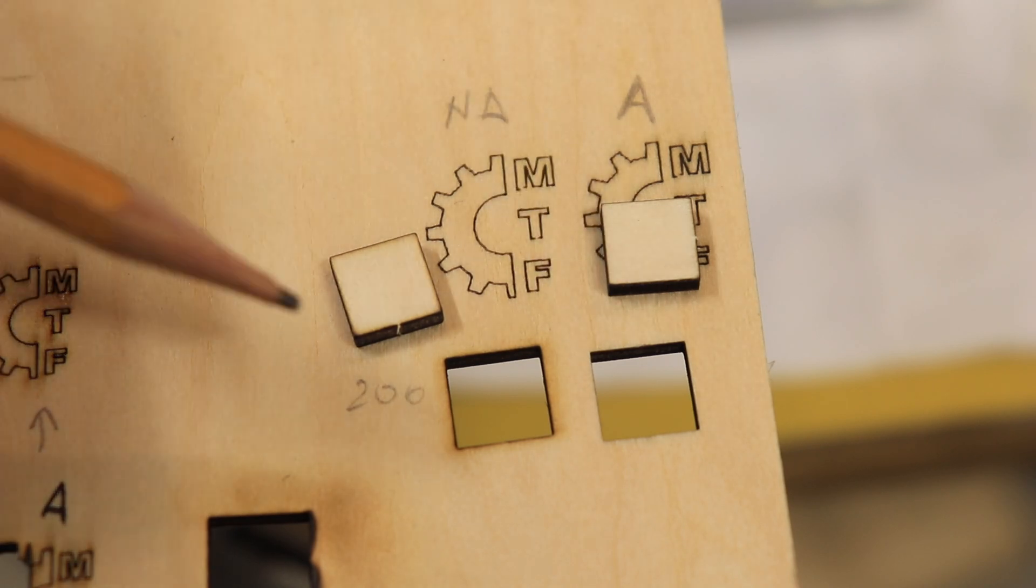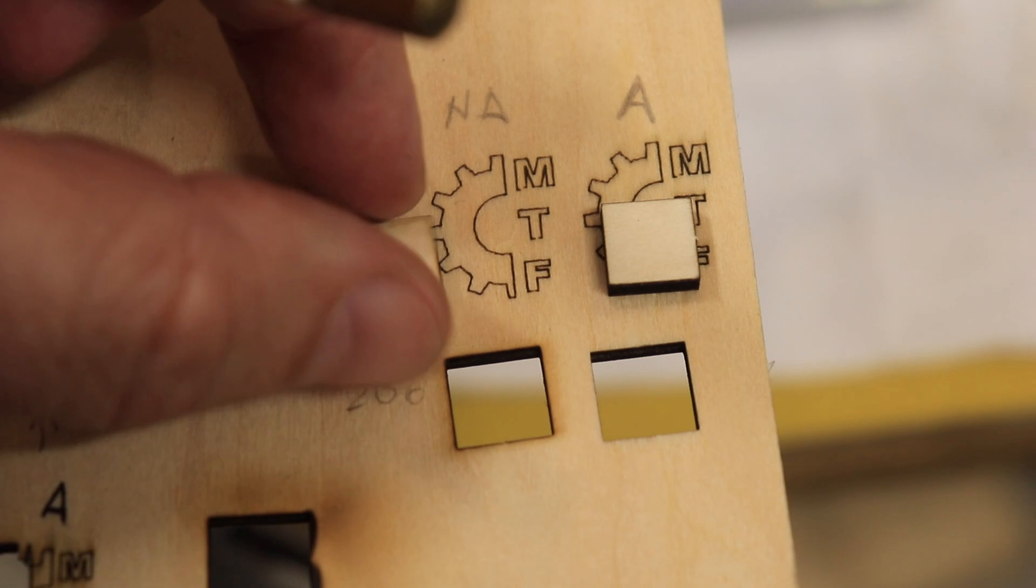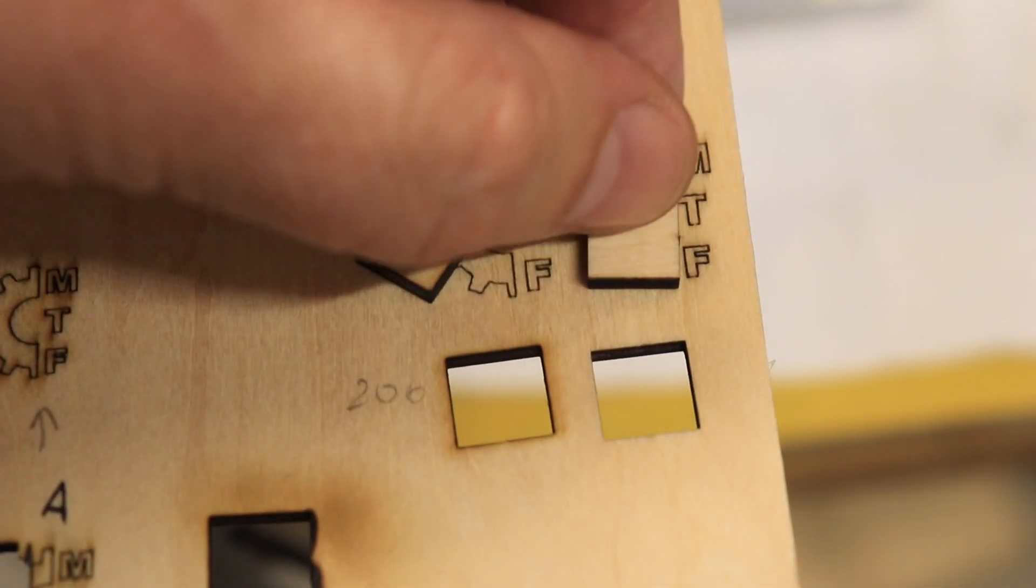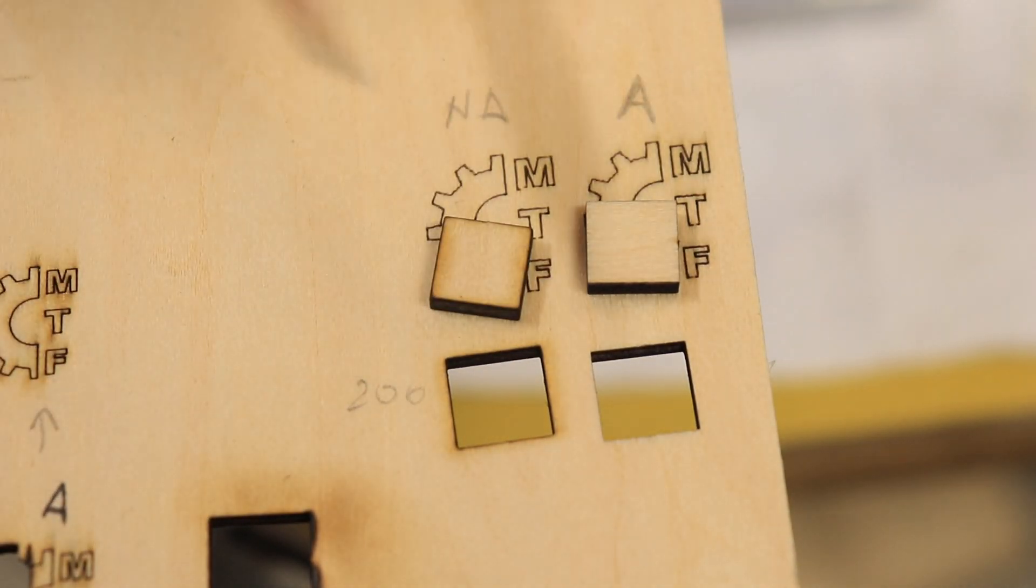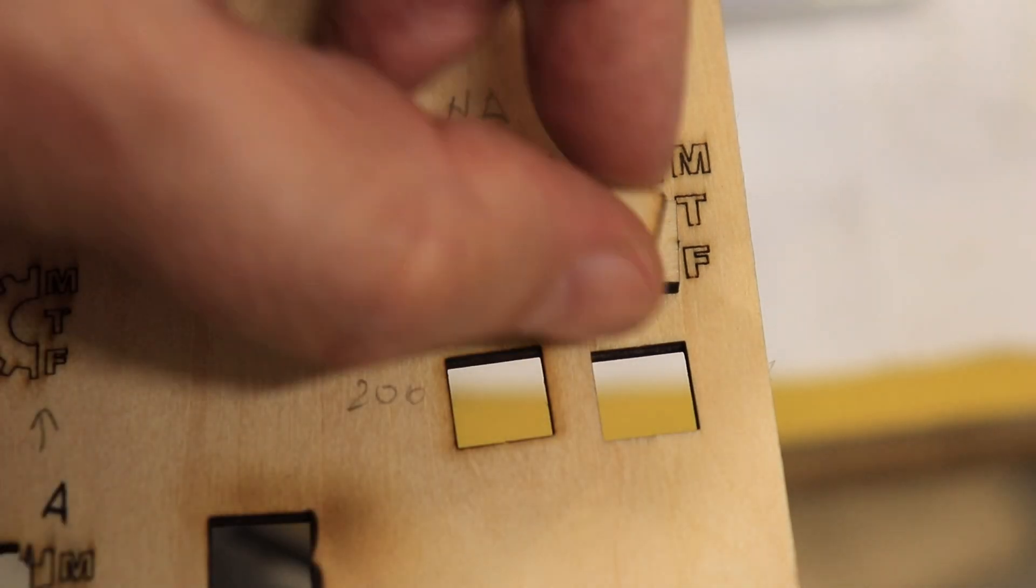There are no burn edges now. This was cut at 200 mm per minute and I will show you the other side of the cuttings. Even the other side is much cleaner. I will show you this one too.